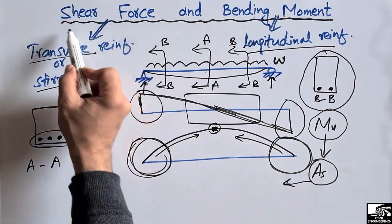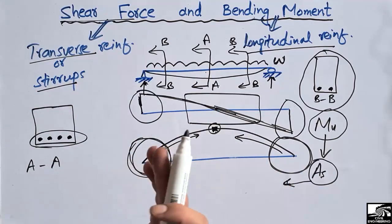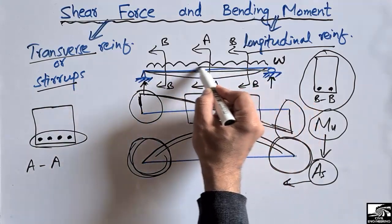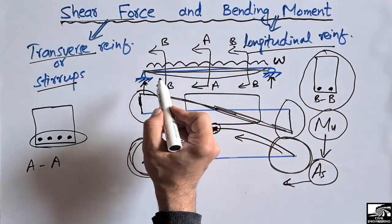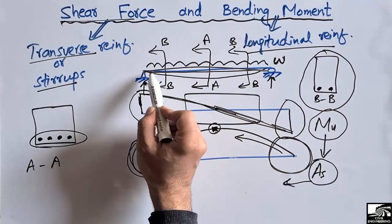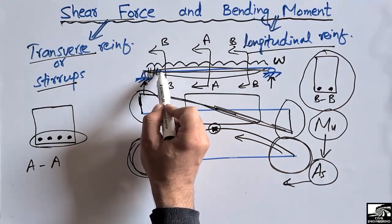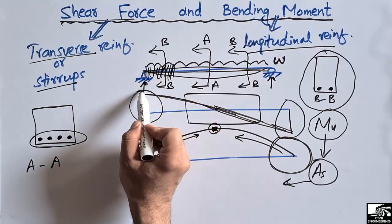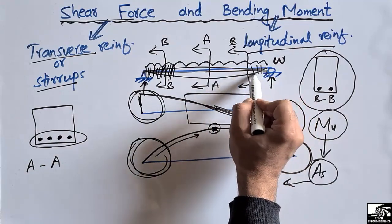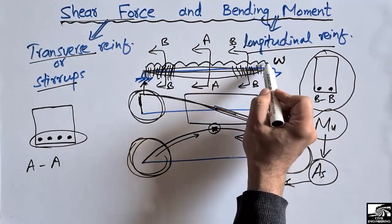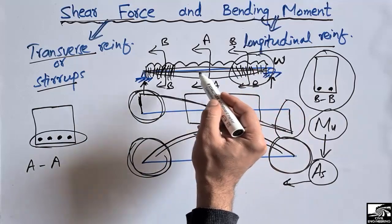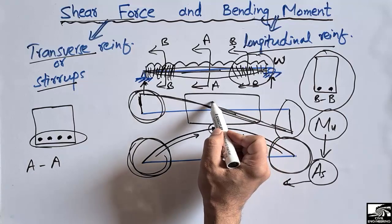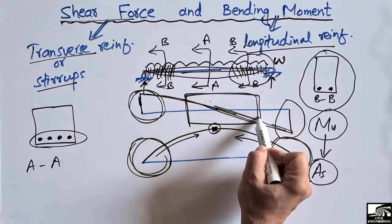Similarly, from the shear force diagram we understand how much spacing should be provided between stirrups. The stirrup spacing should be very less at the ends of the beam because the shear forces are higher there. At the mid-span, there will be higher spacing between the stirrups because the shear force is almost zero at the mid-span.